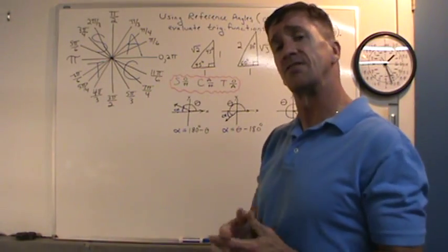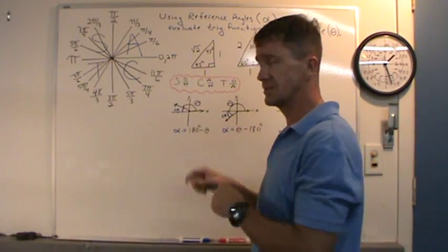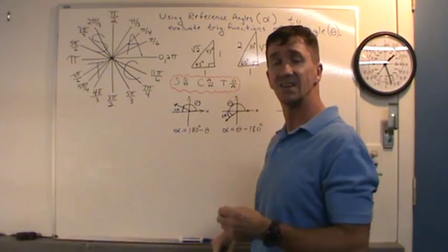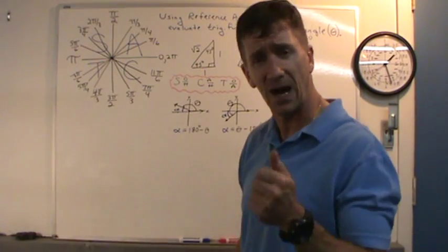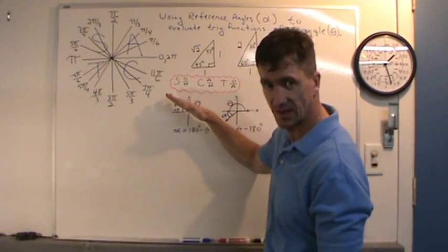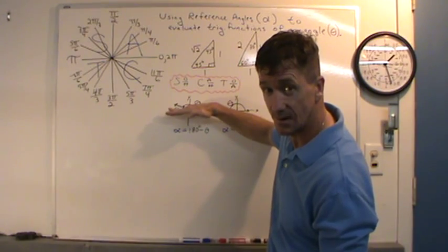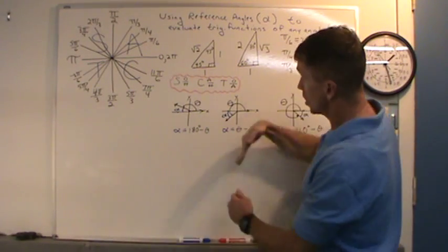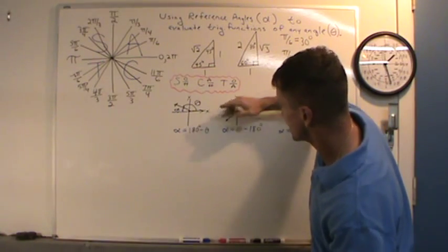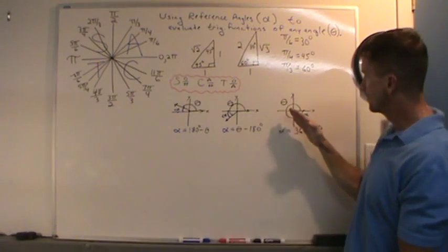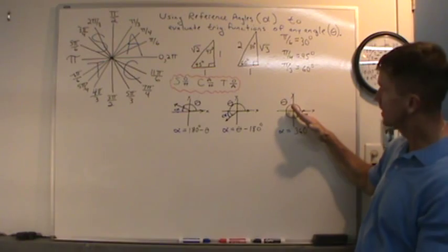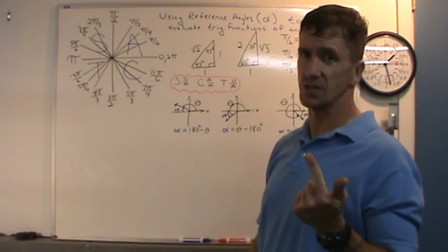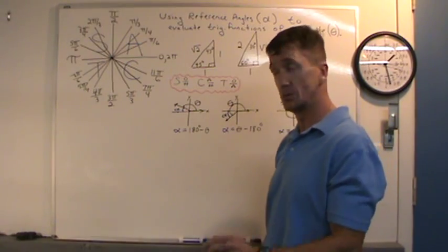To begin, I'm going to define what a reference angle is. Throughout this video I'm always going to refer to the reference angle as the Greek letter alpha. So what is a reference angle? A reference angle is a positive acute angle formed by the terminal side of an angle theta and the x-axis. It's that little angle right in there. It's always positive, always acute — meaning it's less than 90 degrees.